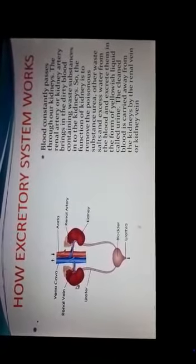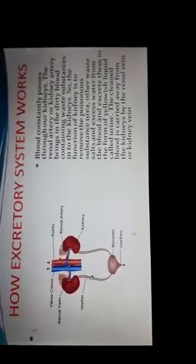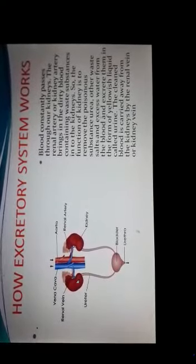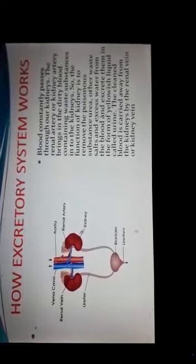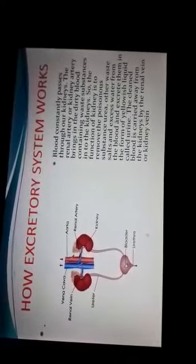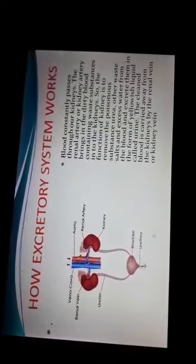The urine is passed into the urinary bladder through the tube called the ureter. So the function of the ureter is to carry the urine from the kidney to the bladder. Here in the bladder, urine is stored, and it is expelled out of the body through the urethra — the opening through which urine exits the body.